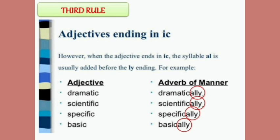Adjectives ending in -ic: when an adjective ends in -ic, the syllable -al is usually added before the -ly ending. For example: dramatic → dramatically, scientific → scientifically, specific → specifically, basic → basically. Whenever any adjective ends in -ic, you need to add -ally.